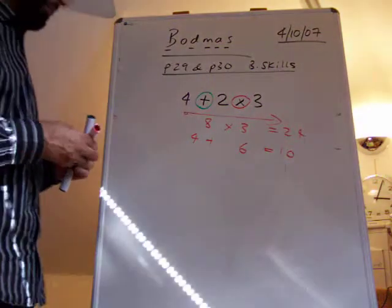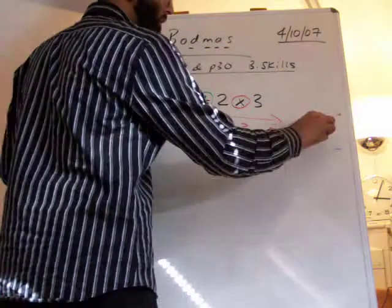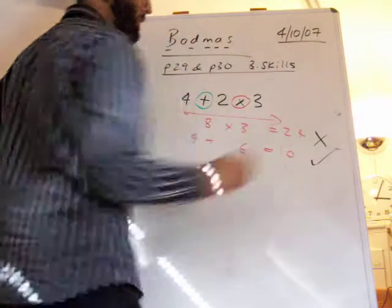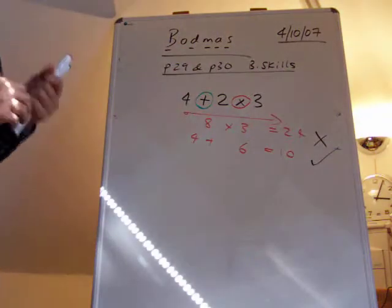There's two different ways of doing the question. This way is the wrong way. This way is the right way. Why is that?